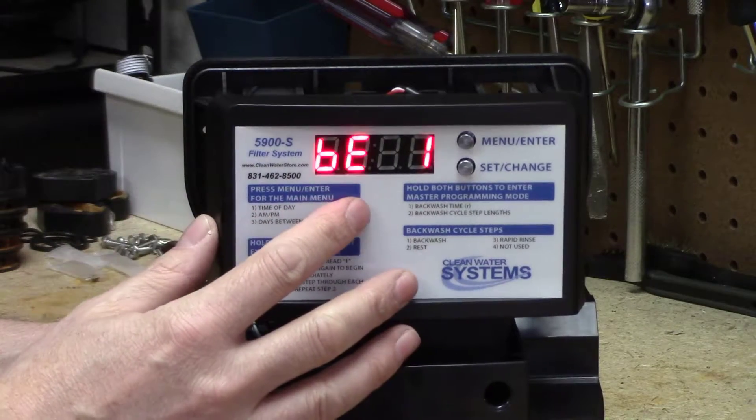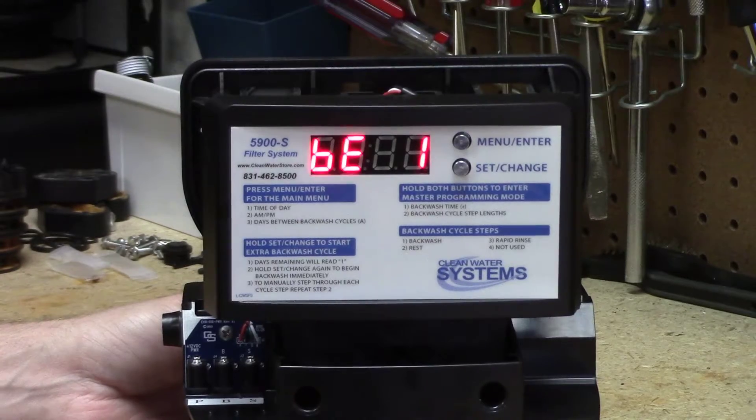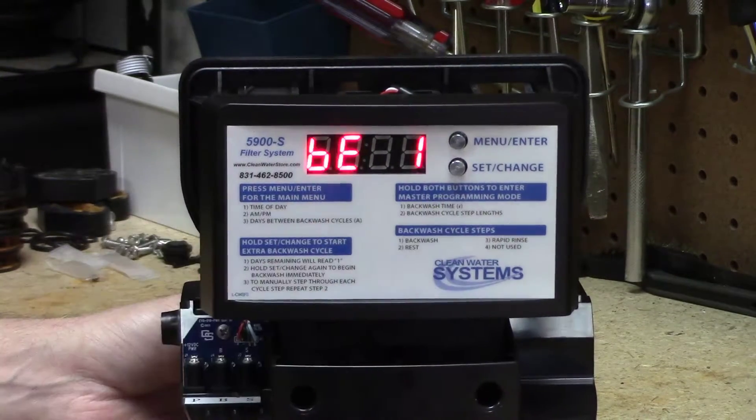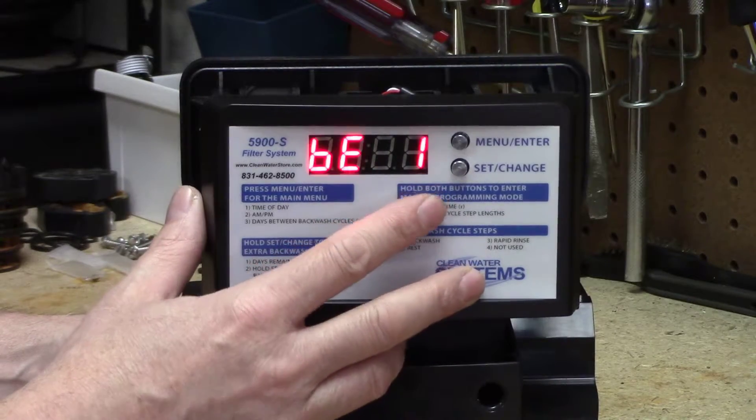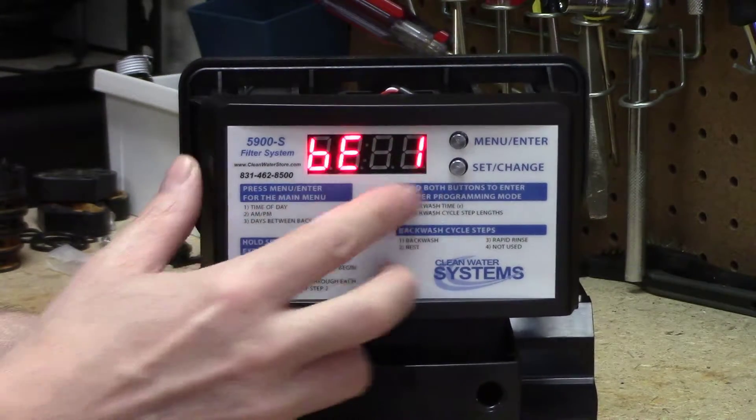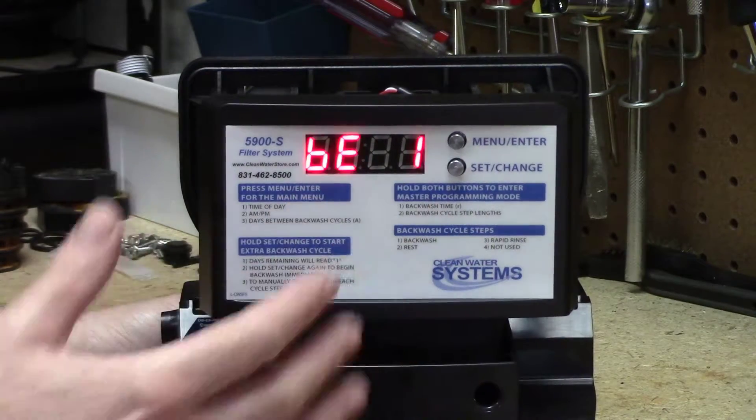This is the Bluetooth enabled. If you go online with your iPad or your iPhone, you can download the Legacy app, and then you can read all of this digital information remotely from your smartphone or your iPad. BE1 means Bluetooth enabled, and 1 means it's on. It doesn't have to be off if you're not using it.